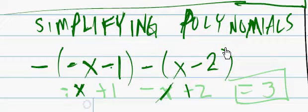So that becomes negative times a negative, of course, becomes positive. So that's plus x. Negative times a negative becomes positive, plus 1.